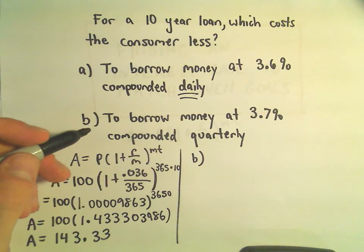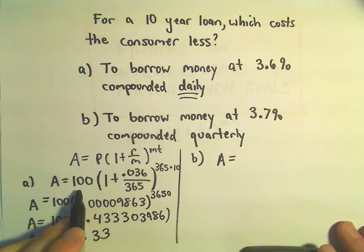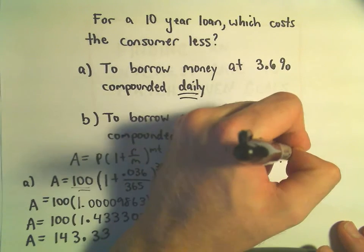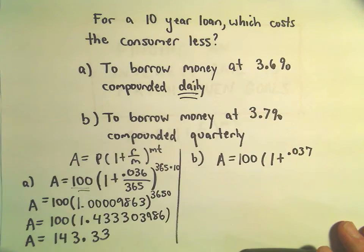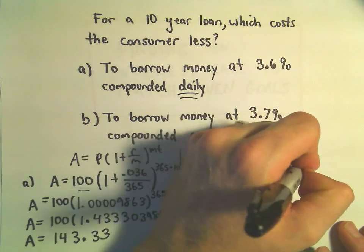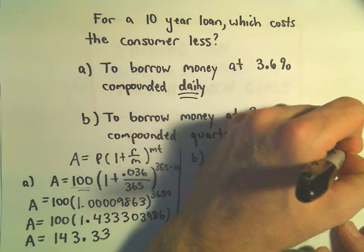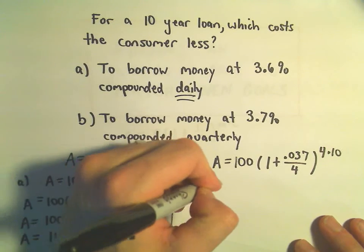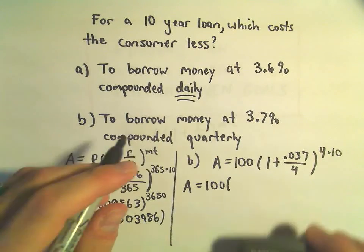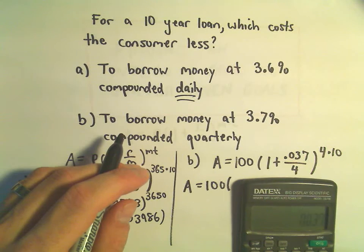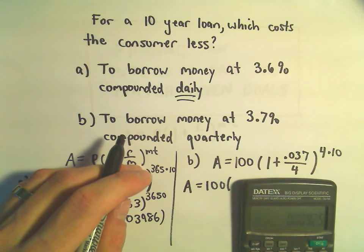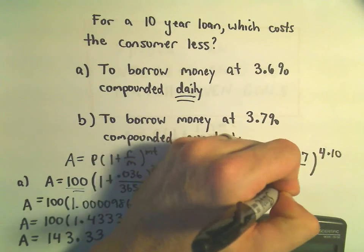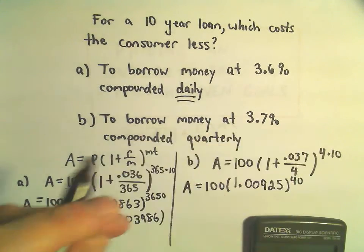Part B will do everything very similarly. So again, let's assume we start with the same principal of $100. 1 plus the rate, which in this case is .037. We're doing it quarterly, so we'll divide by 4 and then we'll take 4 times 10 to get our exponent. So we have 100, let's see, so we get .037 divided by 4. We'll add 1 to that, so I'm getting 1.00925 raised to the 40th power.